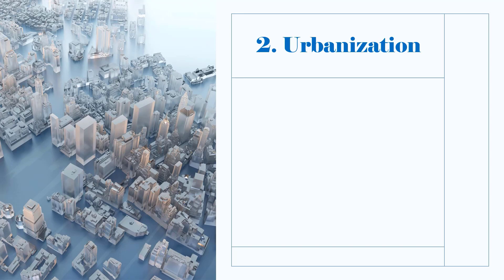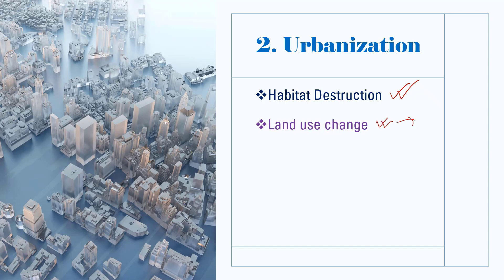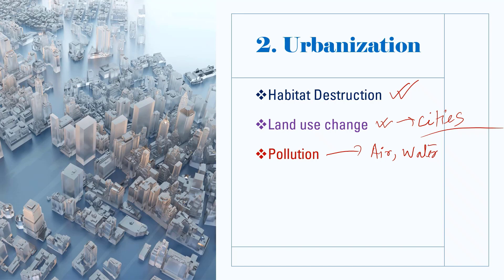Urbanization has a significant impact on the environment. Habitat destruction: Urban development leads to the destruction of natural habitats, including forests, wetlands, and green spaces, resulting in the loss of biodiversity and disruption of ecosystems. Land use changes alter land use patterns, converting agricultural land and open spaces into built-up areas, which can lead to soil degradation and reduced agricultural productivity. Increased industrial activities, transportation, and energy consumption in urban areas contribute to higher levels of air pollution. Urban runoff, industrial discharges, and inadequate waste management can contaminate water bodies, affecting water quality and aquatic life.